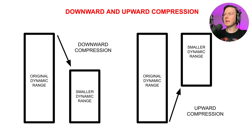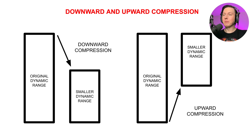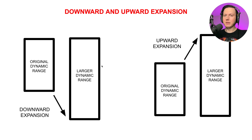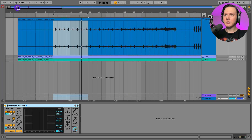Here is a visual representation of downward and upward compression. With downward compression, the original dynamic range is made into a smaller dynamic range by compressing the signal down. With upward compression, we also create a smaller dynamic range but by compressing the signal up. For expansion: downward expansion increases the dynamic range by pulling quieter sounds quieter, and upward expansion increases the dynamic range by pushing loud signals above the threshold even louder. Now that you understand the four types of processing, let's talk about how to use the plugin.